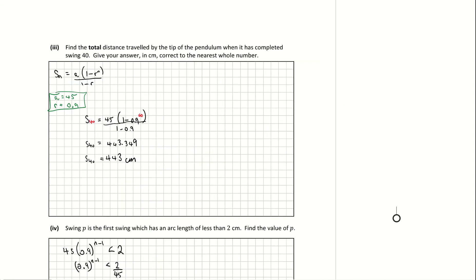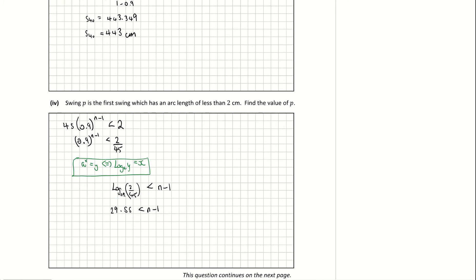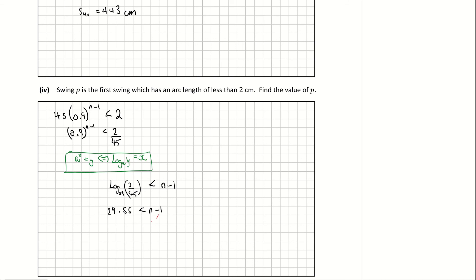Adding 1 to each side: 29.55 plus 1 gives N greater than 30.55. Since the swing number must be a whole number, the swing with an arc length of less than 2 cm is swing 31. The question calls it swing P, so P equals 31. To verify, substitute 31 back into 45 times 0.9 to the power of N minus 1 and confirm it is less than 2.